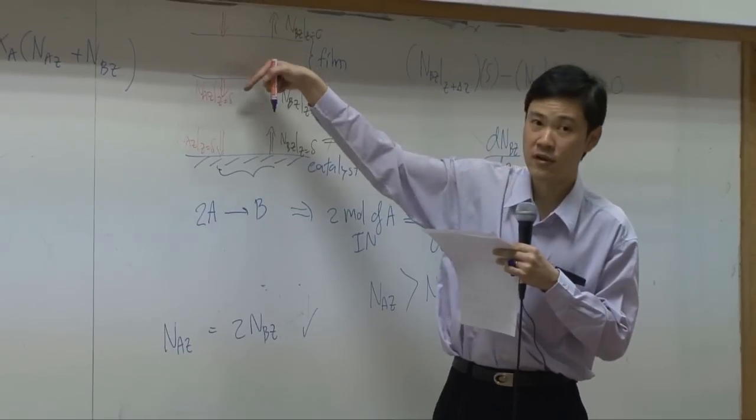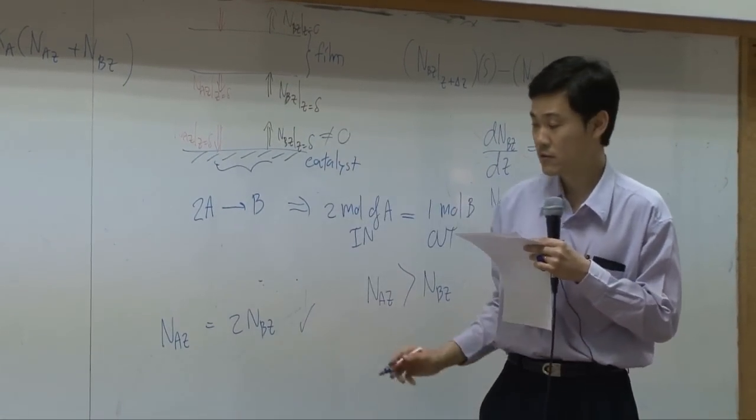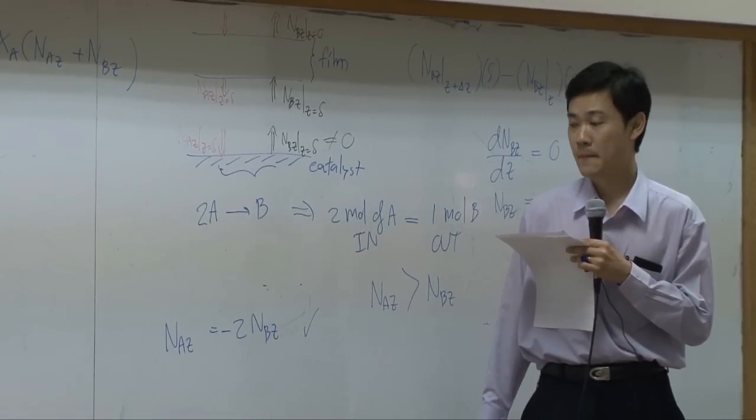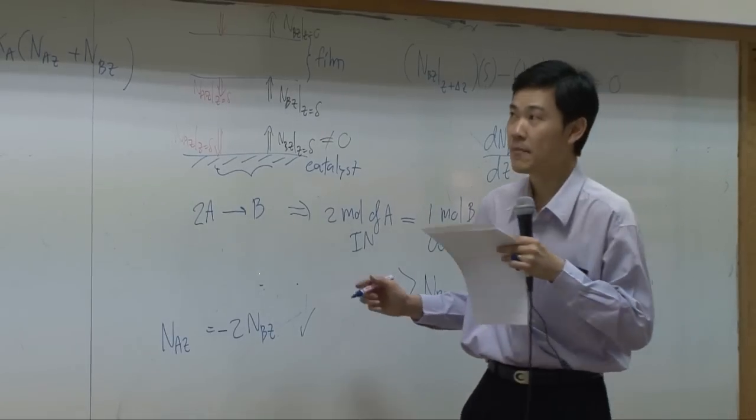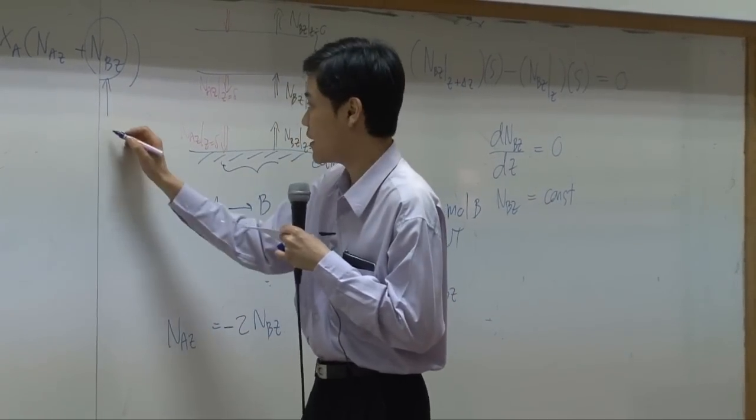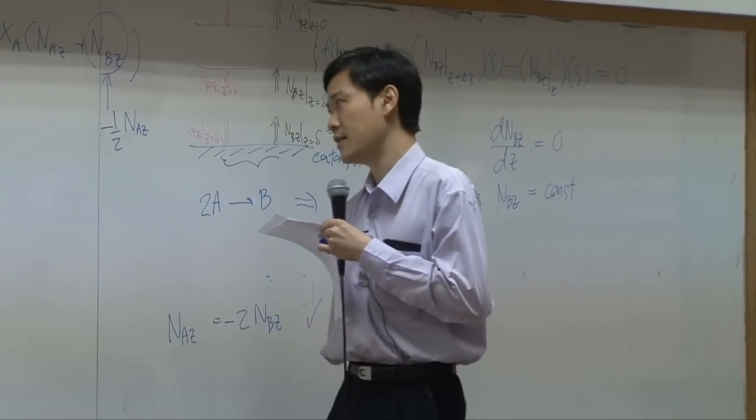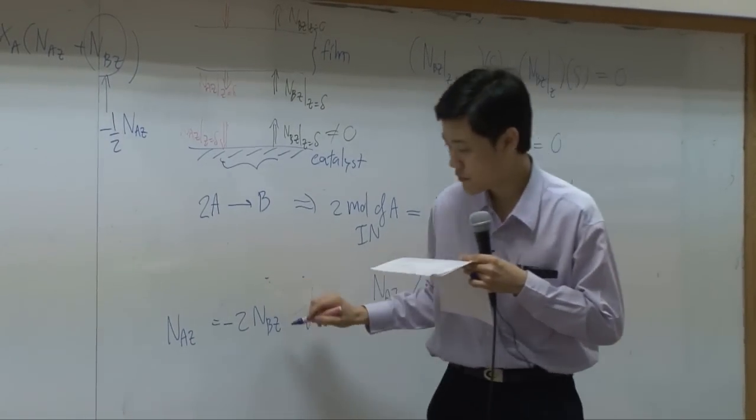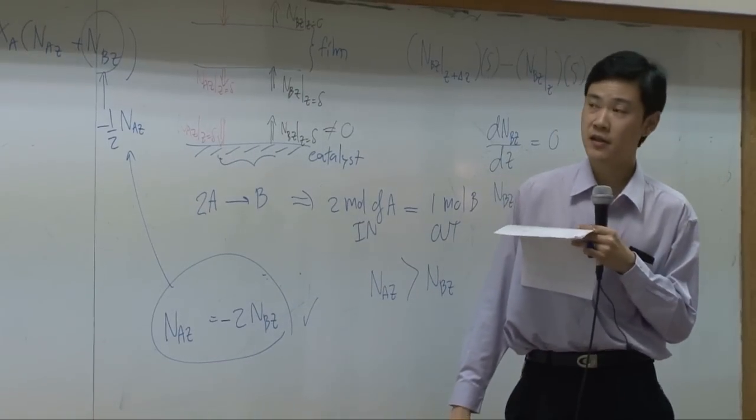A goes downward along Z direction, but B goes upward. So directions are opposite. So I'm going to put negative here. Okay? So I can replace N_B_Z here to be 1 over 2 or minus 1 over 2 N_A_Z. According to this relationship, you can convert N_B_Z into N_A_Z.